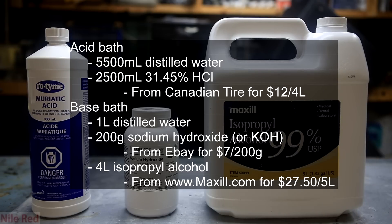For the acid bath I used 5500 milliliters of distilled water and 2500 milliliters of 31.45% hydrochloric acid. For the base bath I used 1 liter of distilled water, 200 grams of sodium hydroxide or potassium hydroxide, and 4 liters of isopropyl alcohol.